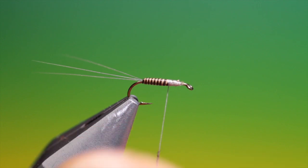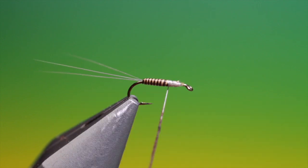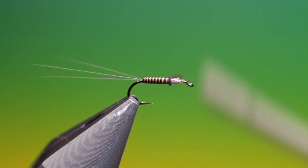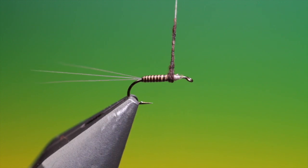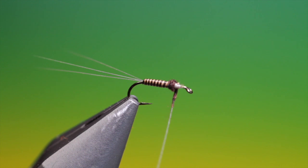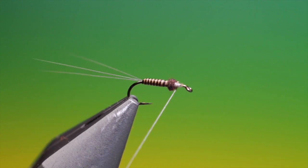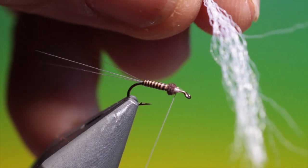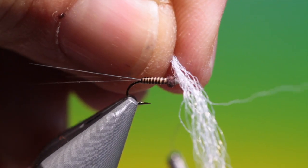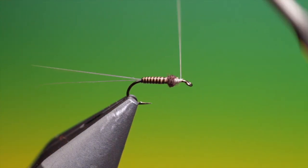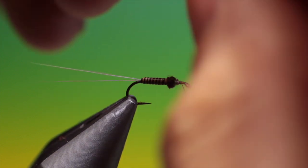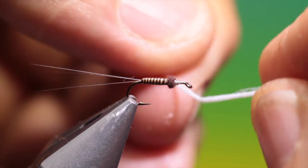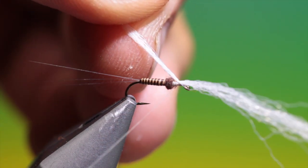And we take a tiny dot of mahogany super fine dubbing. And just put this at the rear of the thorax. Then we need a little length of Antron. White Antron. Body yarn. I've got under here. Catch that in.